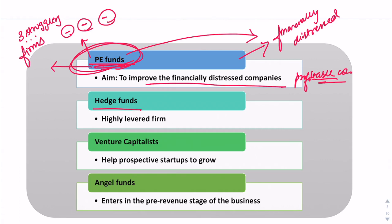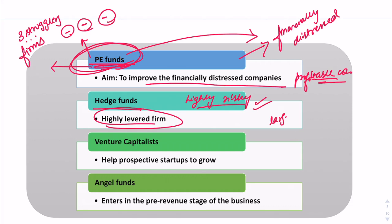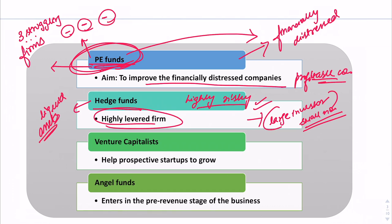Now we have hedge funds. They are highly risky because they are highly levered — they borrow more than their capacity. Large investors are involved here but in small numbers, meaning only wealthy individuals participate in hedge funds. They generally invest in liquid assets so as to meet their interest payments. Because a small number of investors are involved, they are not regulated like mutual funds, where a large number of investors' stakes are involved.